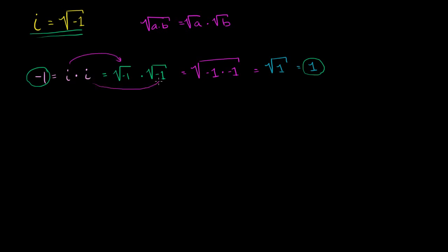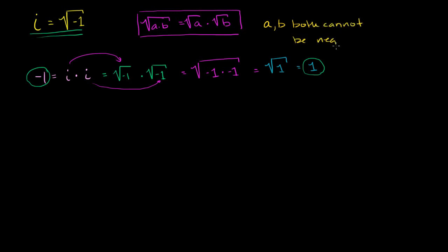What you should point out is that was not the incorrect step. It is true that negative 1 is not equal to 1. But the faulty line of reasoning was in using this property when both a and b are negative. If both a and b are negative, this will never be true. Normally when this property is given, they'll include a constraint: a and b must be greater than or equal to 0. It is false if both a and b are negative.